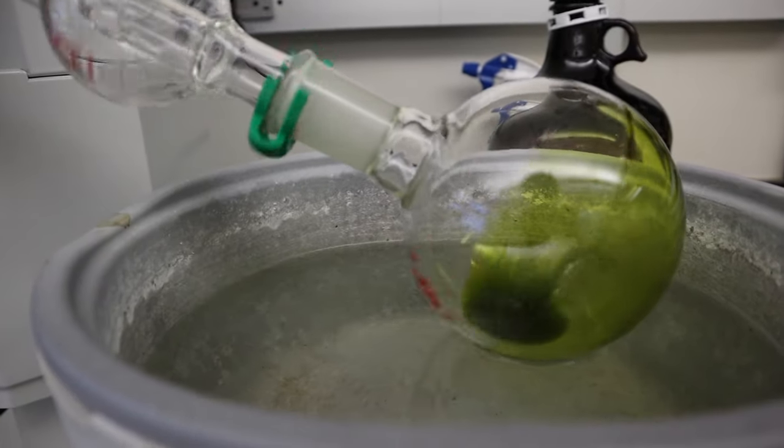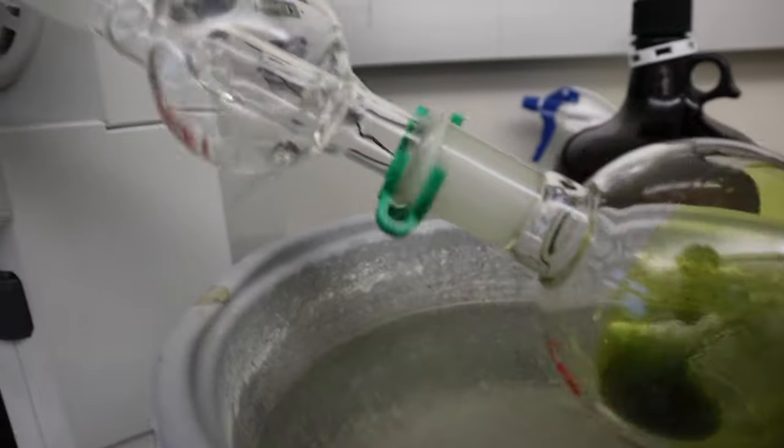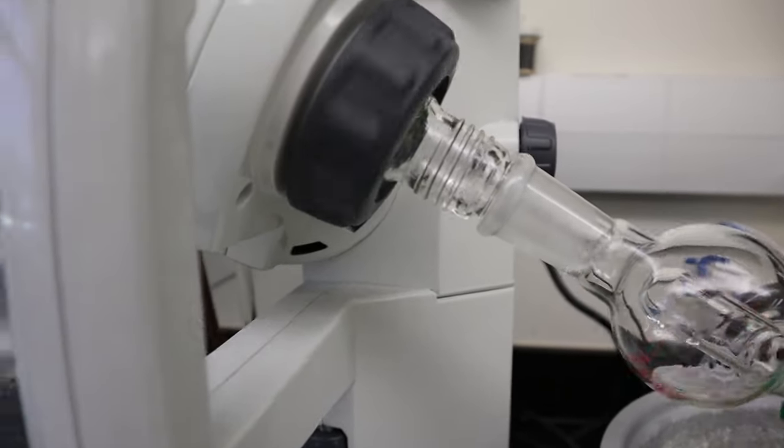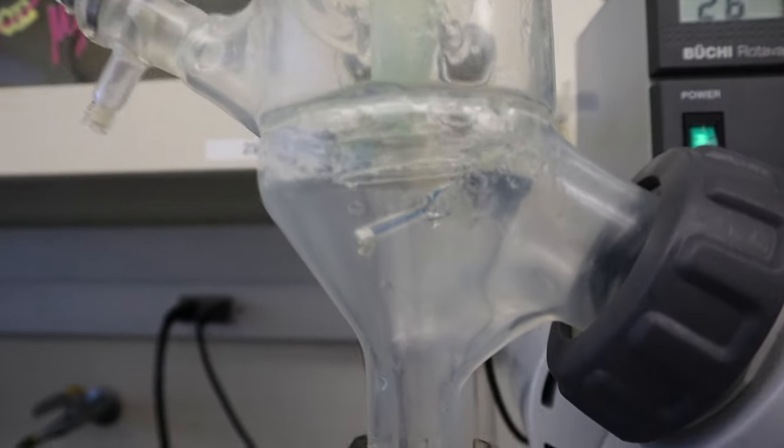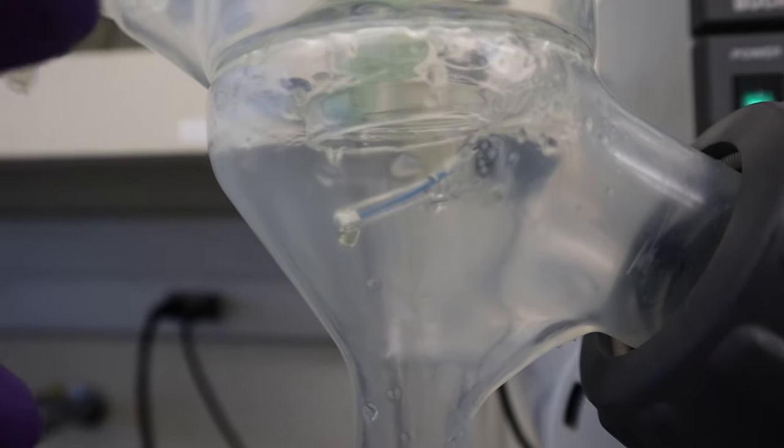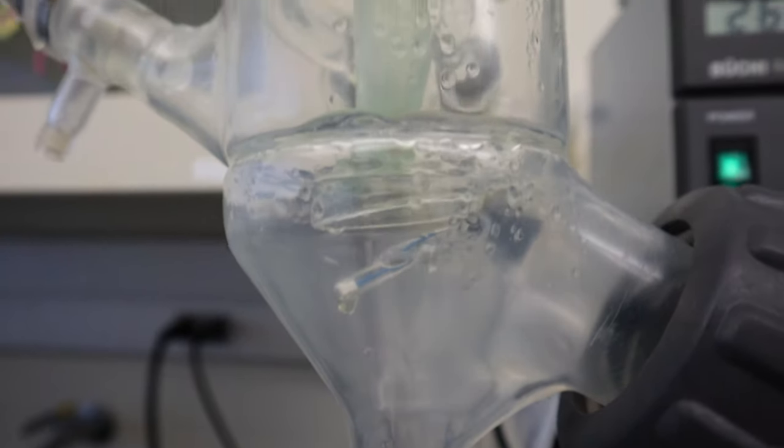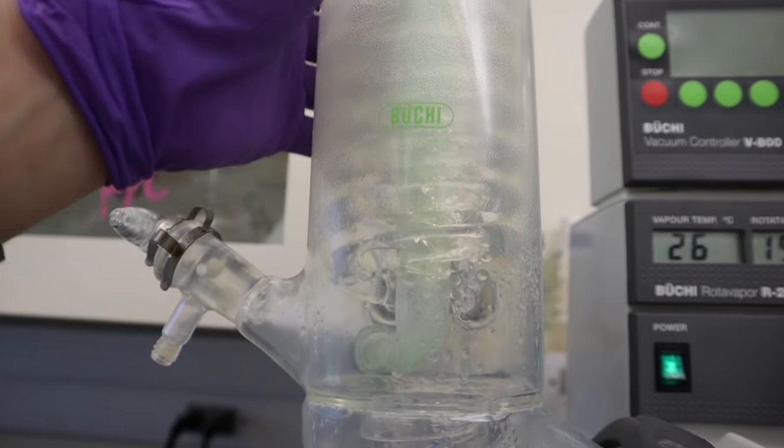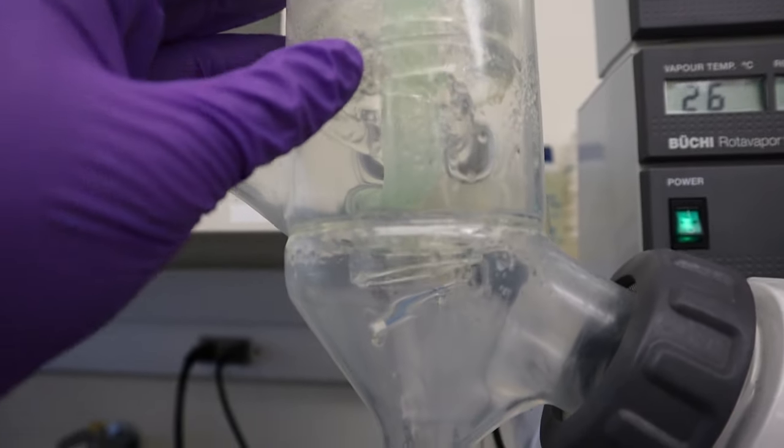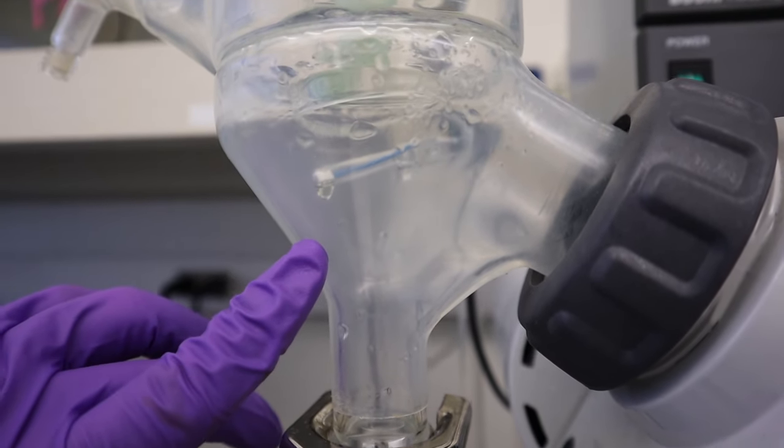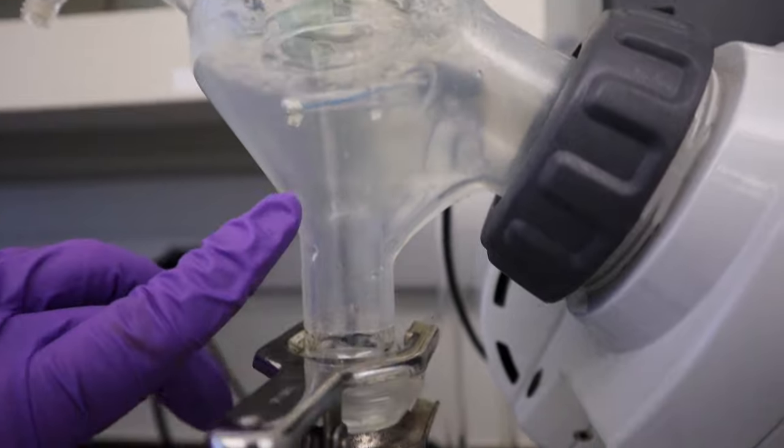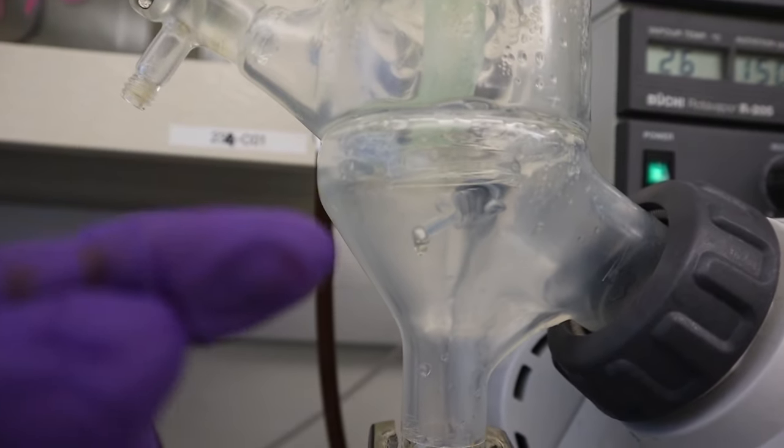As you can see, the process has already started. The solvent is already evaporated. See those droplets? It means that the solvent that evaporated is already condensing, turning it into its liquid form, and it will be collected here. That's pretty cool.